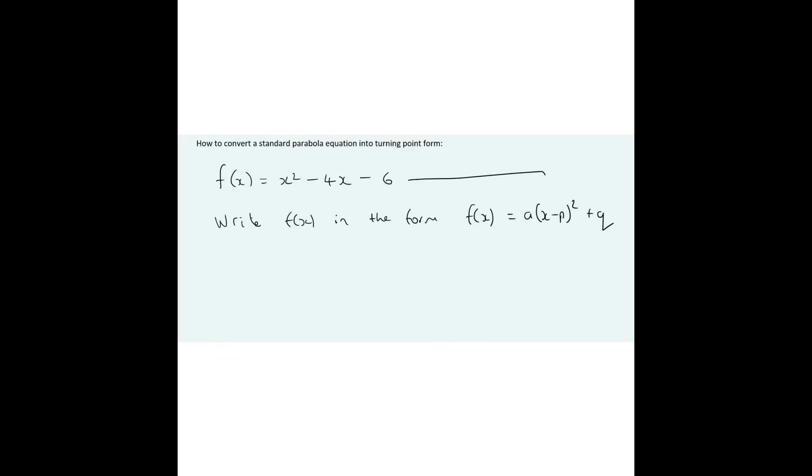And then they say f of x equals a times x minus p squared plus q. So we're going to need to know how do we convert from this equation to this over here. And what we're going to do is we're going to use completing the square.